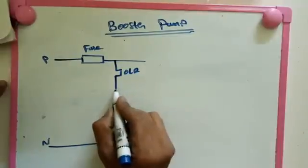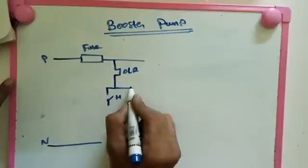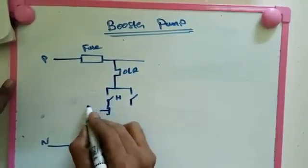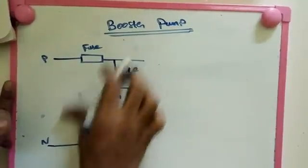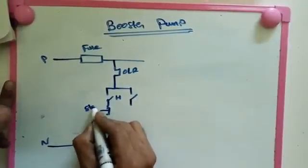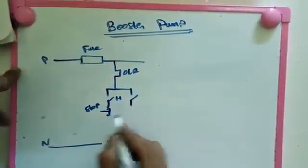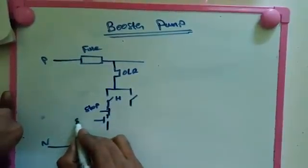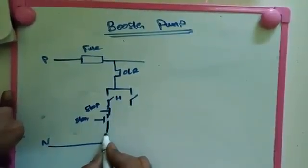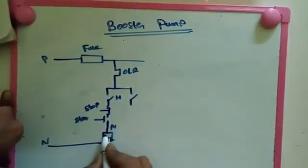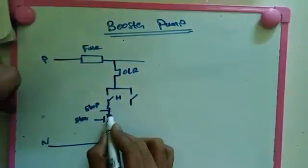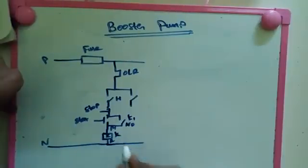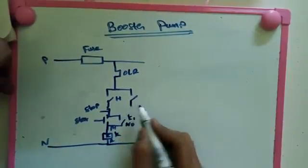OLR close, and then we make hand, and then we make R2. Here we put stop button. After that we make start, and then we make A1 and A2. This conductor is for K1, the main contactor. Here we make K1's normally open contact.